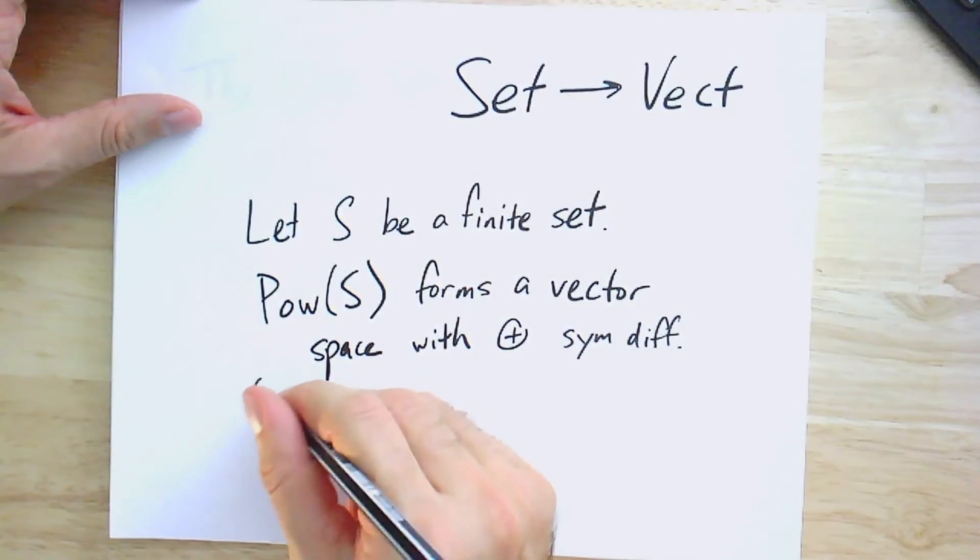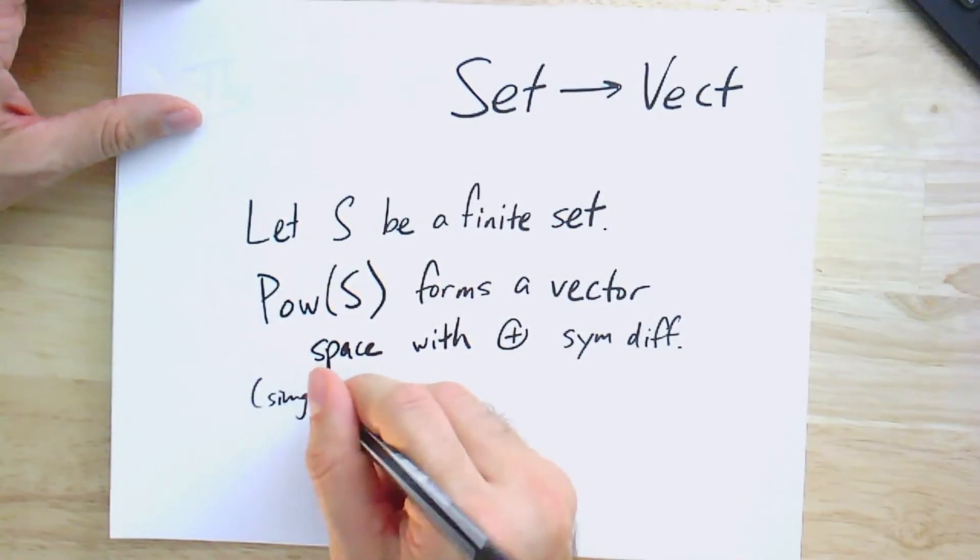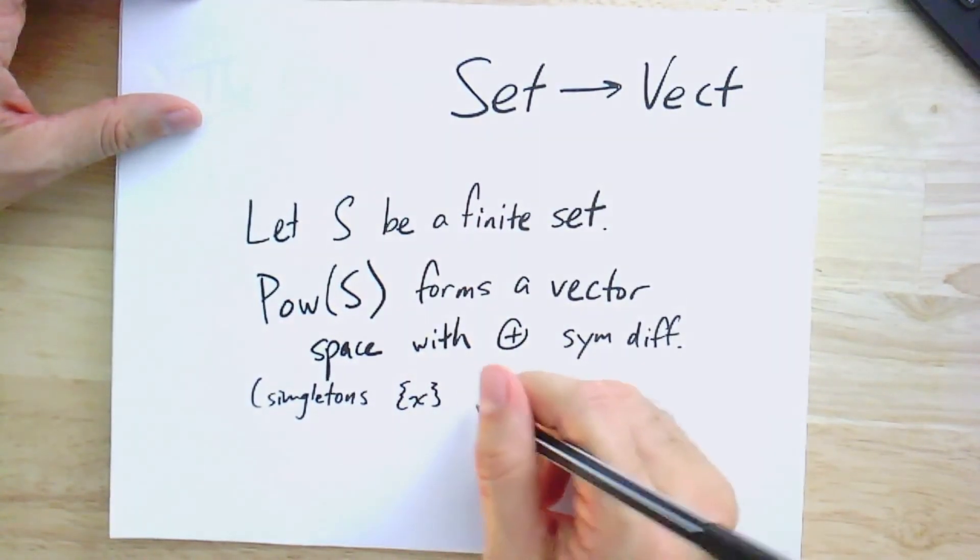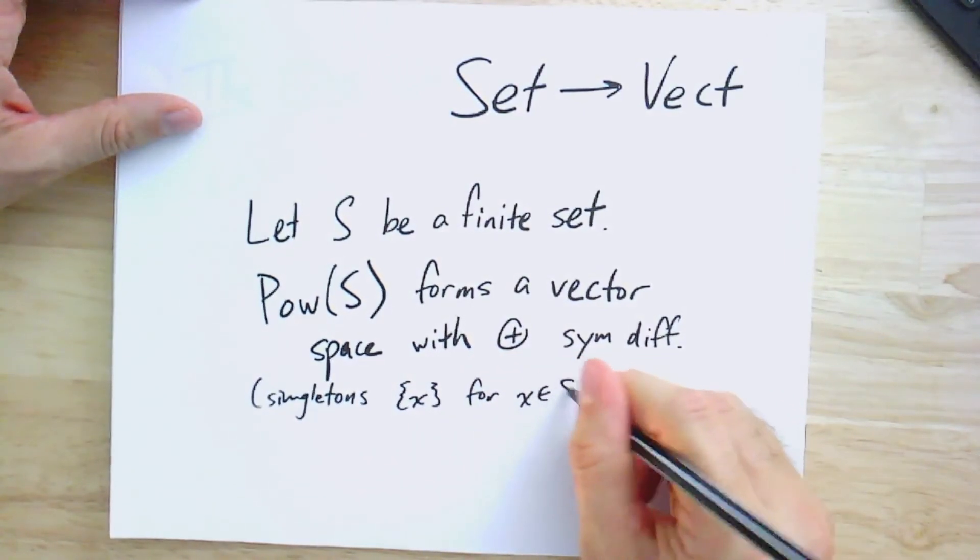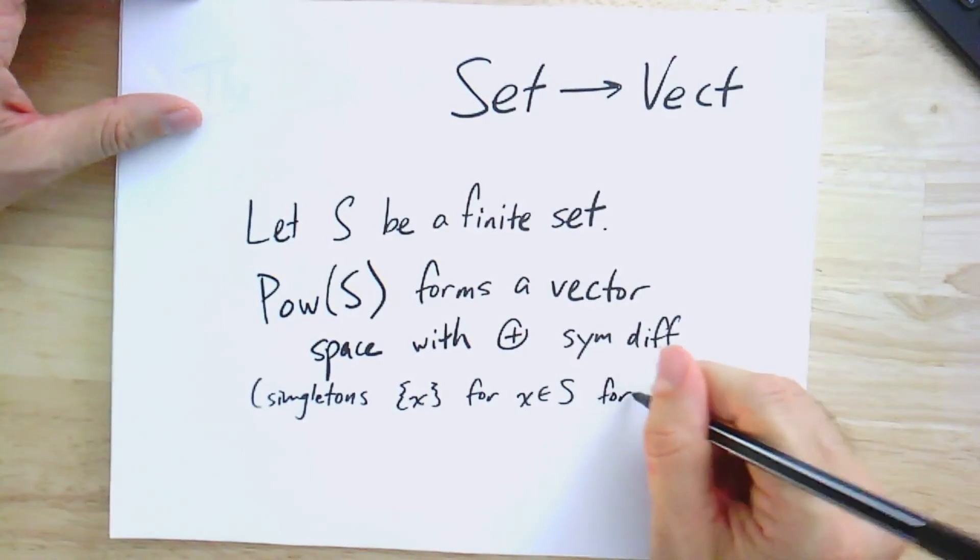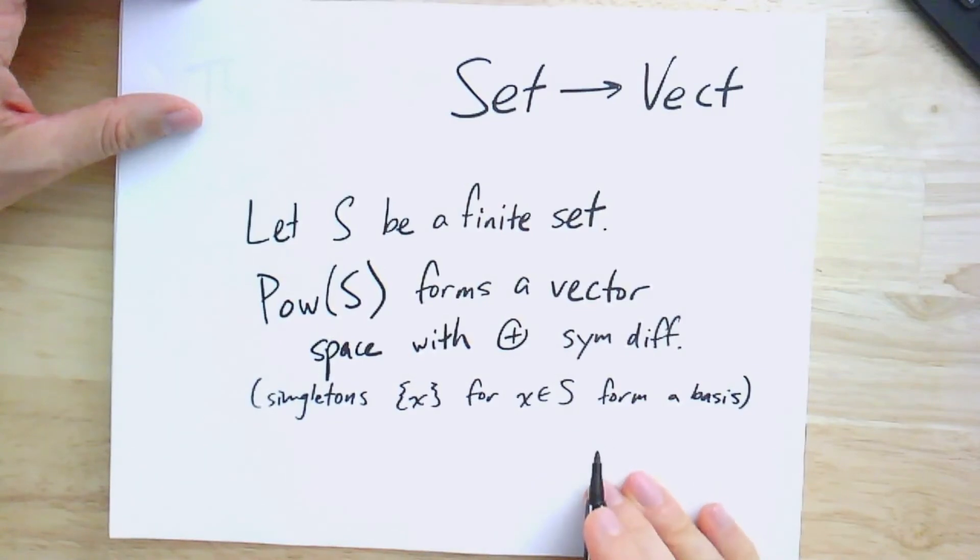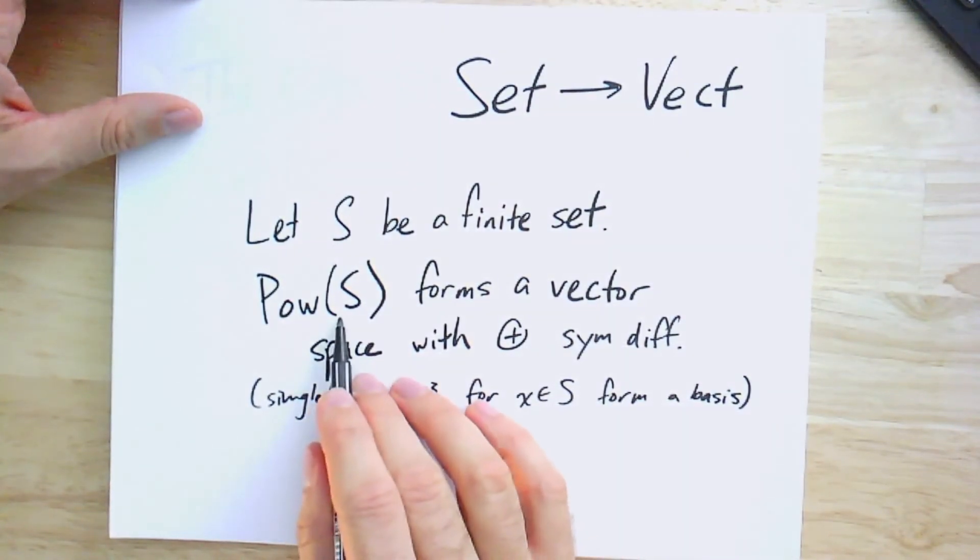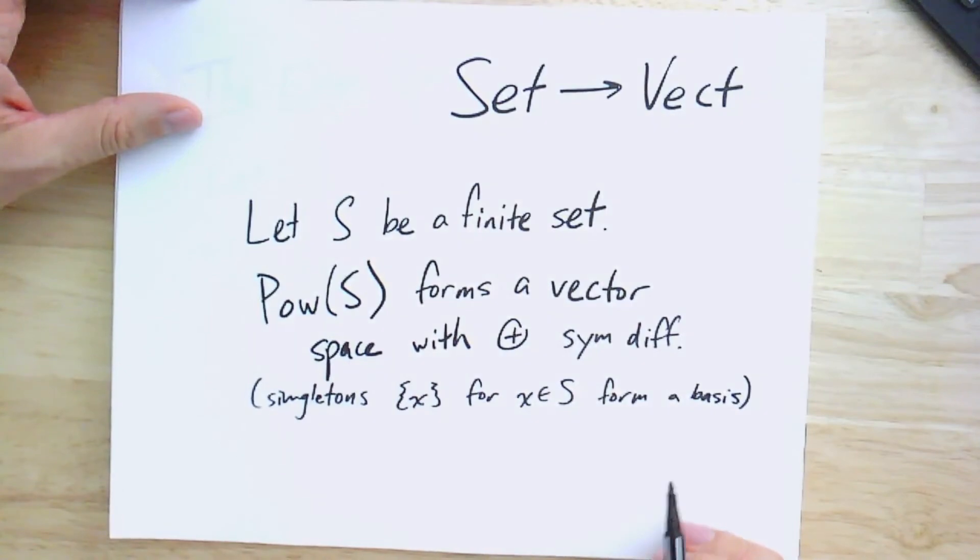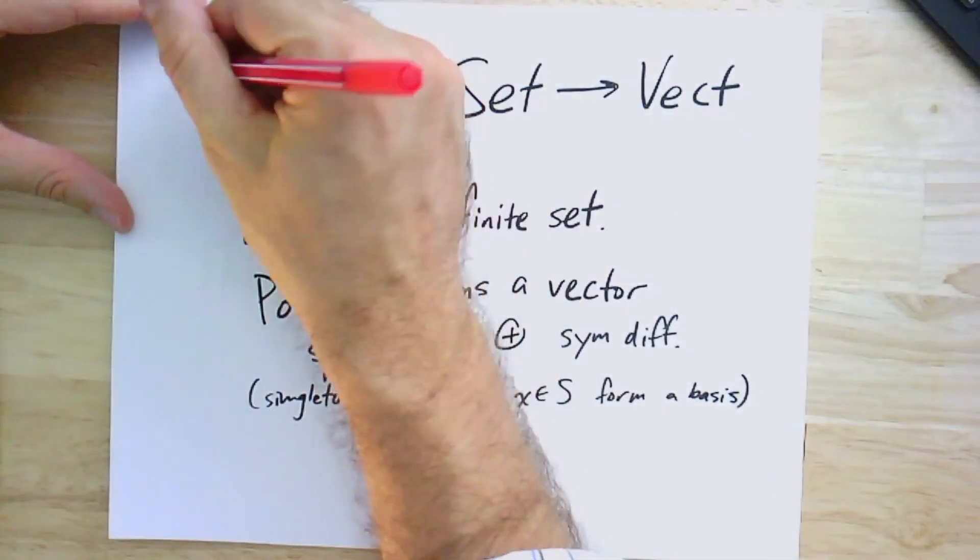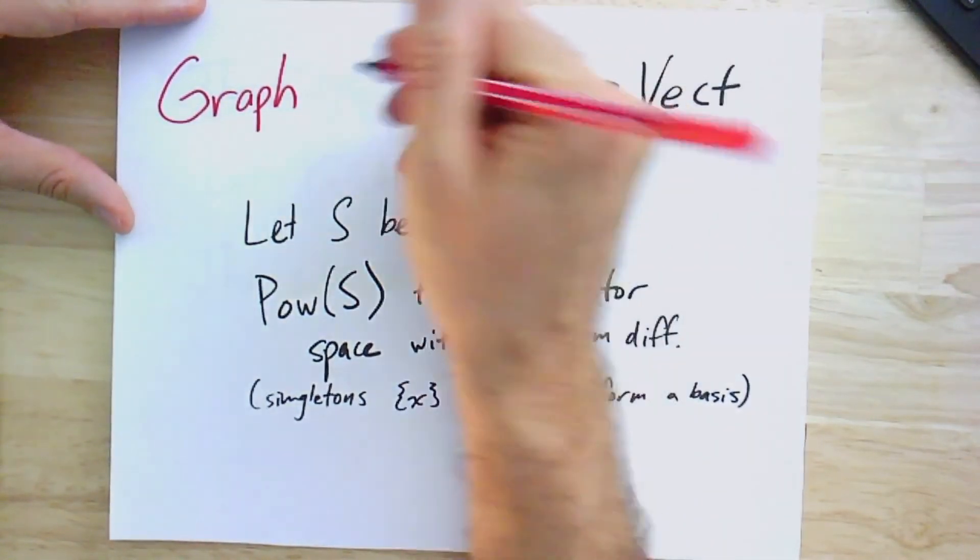Once you do that, you do get a vector space. And in fact, if you want to see what a basis for that space would be, you would just take the singletons. So if I just take a set of size one for each element of the set, that will form a basis. And so the dimension of this space I get is actually just the size or the cardinality of S. So that tells me how to get from sets to vector spaces, but I want to get from graphs to vector spaces. The simplest thing I can do is use the fact that I already know how to go from graphs to sets.